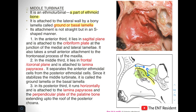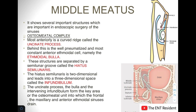The middle third is the part that stabilizes the middle turbinate, also called the basal lamella. In the posterior third, it runs horizontally and is attached to the lamina papyracea and the perpendicular plate of the palatine bone, extending up to the roof of the posterior choana. Next comes the middle meatus, which is the space between the middle turbinate and the lateral nasal wall — the most important part of the nose to study, as most sinus drainage occurs here.